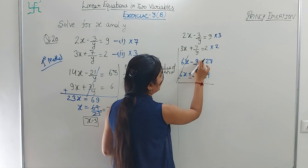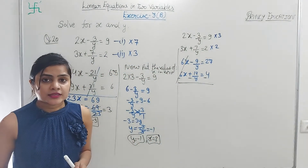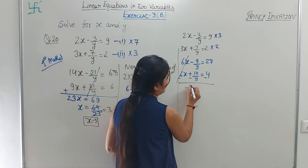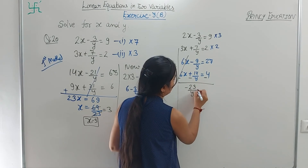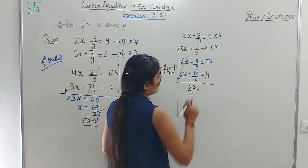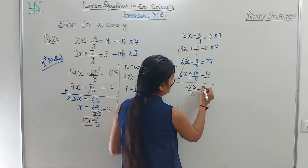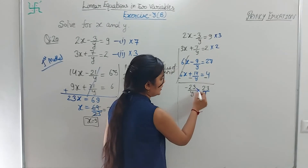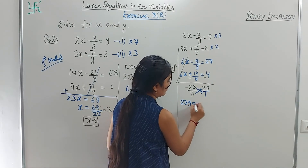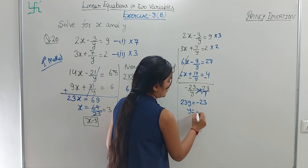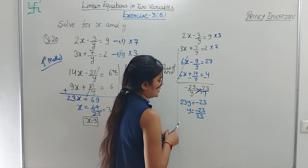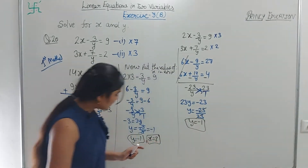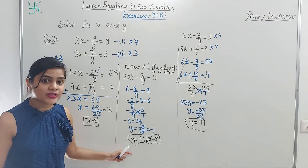Subtracting: x terms cancel. -9/y - 14/y = -23/y. 27 - 4 = 23. So -23/y = 23. Cross multiply: -23 = 23y. Therefore y = -23/23 = -1. The same y = -1 as before!